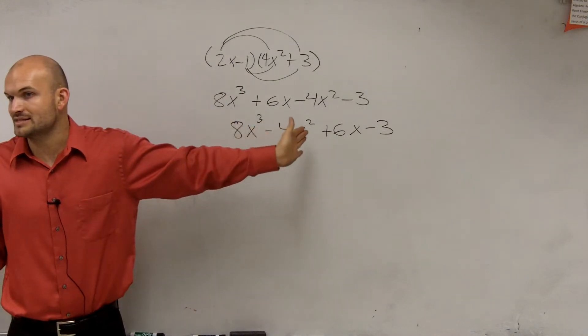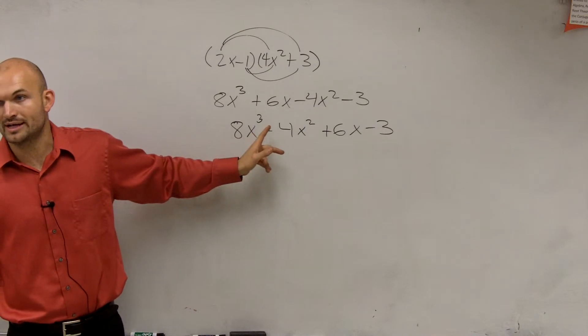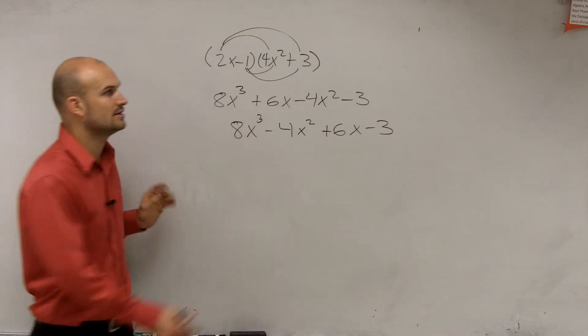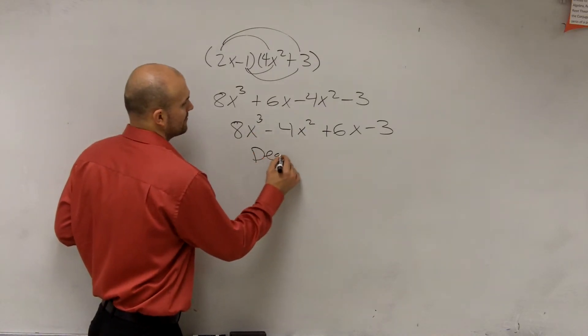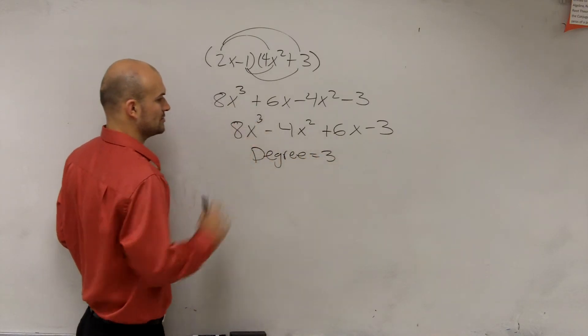Now that they're in descending order, we can take a look at my largest degree monomial. My degree is 3, so therefore I could say the degree equals 3.